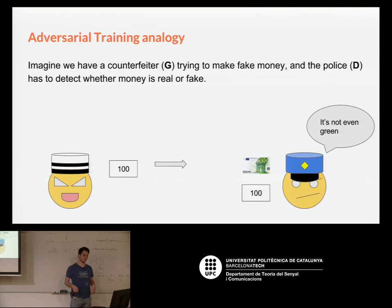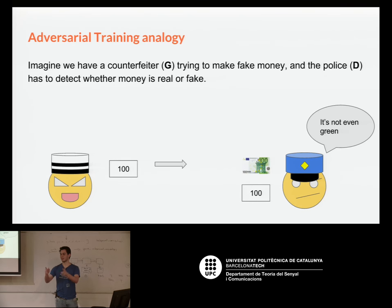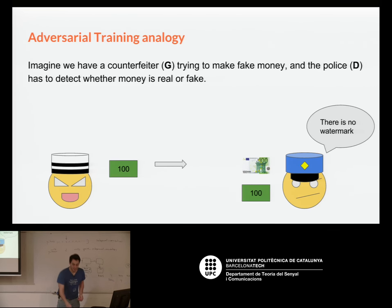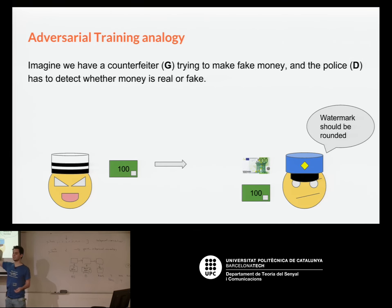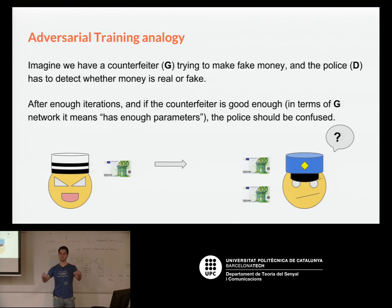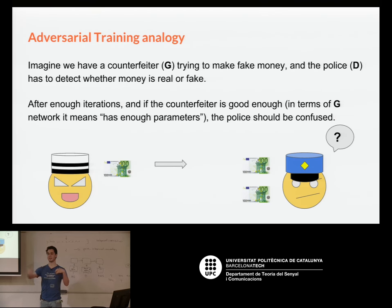The process is depicted a bit like a counterfeiter who first draws a 100 on a blank paper and says 'this is a banknote.' The policeman leaks information — maybe 'it's not even green' — because it detected that a real feature would be the banknote being green. Then it would say 'there is no watermark,' and the counterfeiter would print the watermark. It would say 'it should be rounded,' and by detecting these features D is optimized to detect what's real or fake. The other network has to keep correcting based on these clues. With enough iterations, and if the model is powerful enough — meaning enough parameters and enough epochs — you might reach the closest approximation to the real distribution.